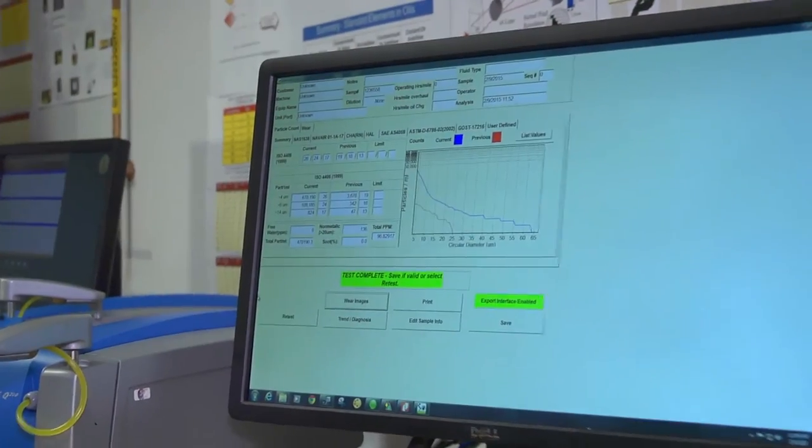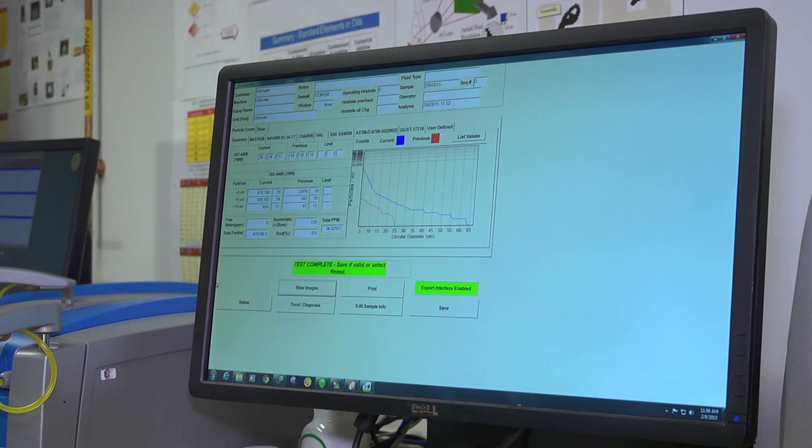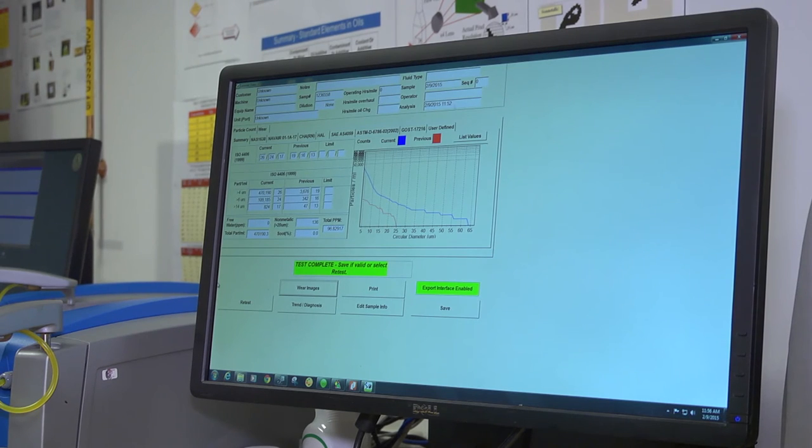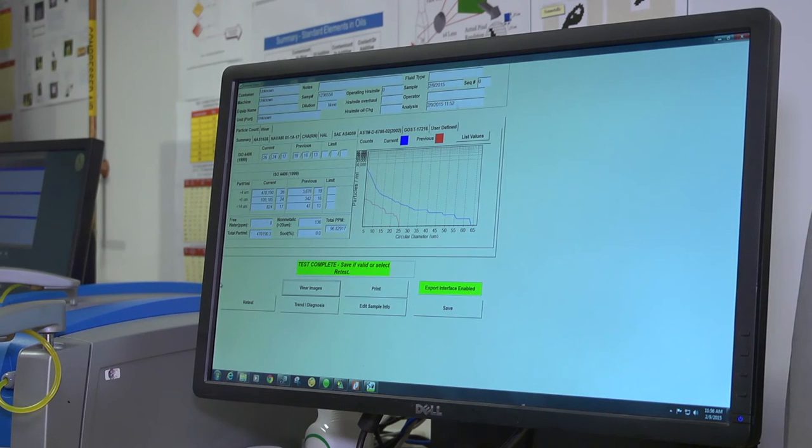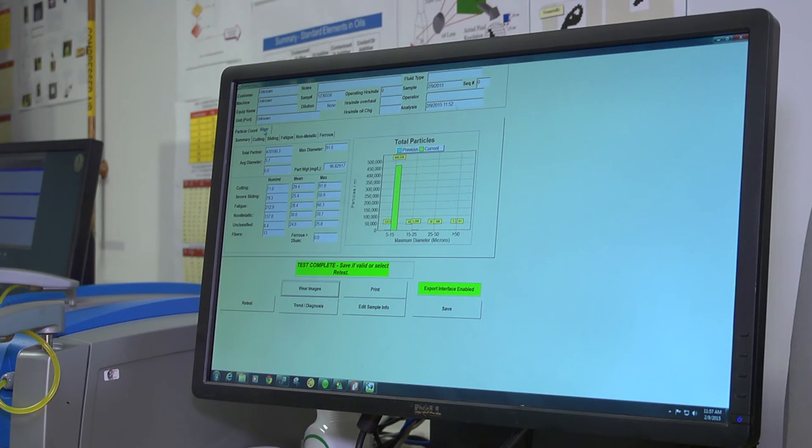We've covered the particle count in terms of the basic ISO codes. Now, the capabilities of the LNF to be a wear monitor is accomplished two ways. I talked briefly about the two types of magnetometers. One gives a total ferrous measurement in parts per million, and the other gives the actual ferrous particle count to complement your total particle count.